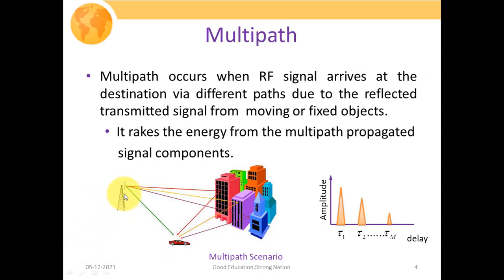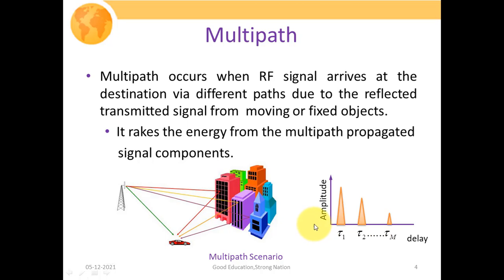Suppose this is our transmitter and this is our receiver. When the transmitter transmits its signal, the receiver will receive signals which are reflected, diffracted, and scattered from multiple components such as buildings, trees, etc. So at the receiver, we will have multiple components — one is the direct path and the combination of multiple reflected components. The values tau 1, tau 2, up to tau M signify the various delays at which we are getting multiple copies of the same signal.